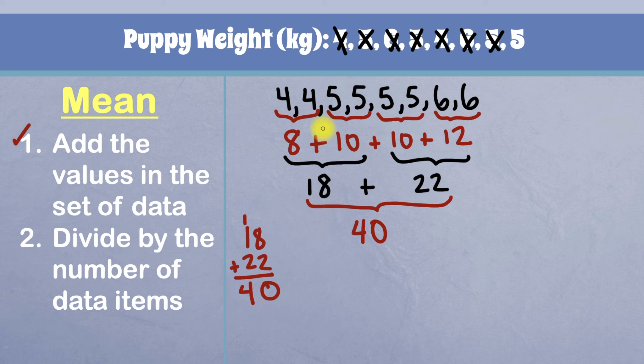And there are one, two, three, four, five, six, seven, eight data items. So we're going to have 40 divided by eight, because 40 is our sum. And eight is the number of data items in this set of data.